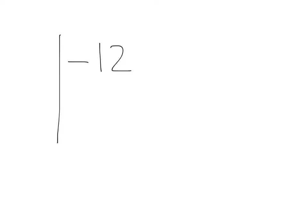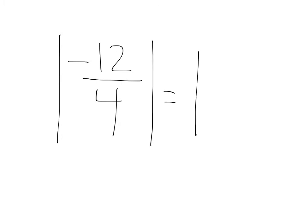Let's say we had absolute value of negative 12 divided by four. That would give us the absolute value of negative 12 divided by four, which is negative three.